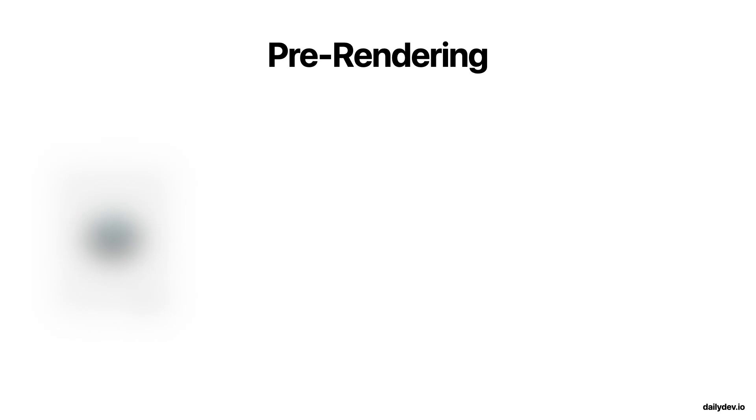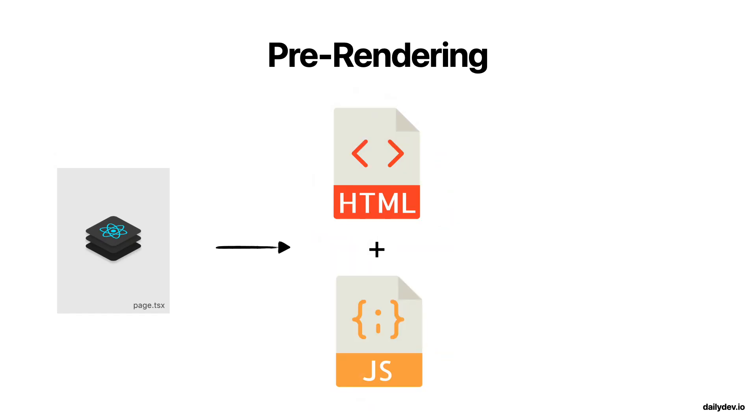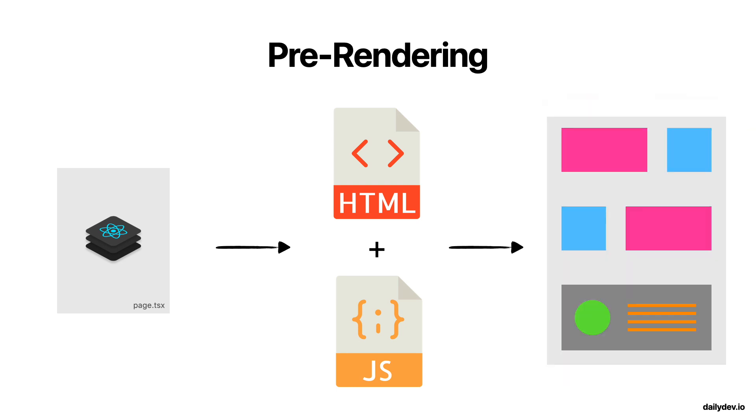Last time, we introduced the concept of pre-rendering — the default method that Next.js uses to render its pages — resulting in better performance and less effort for the client, by serving a pre-built HTML file bundled with the necessary JavaScript. We discussed that Next.js has two main ways of pre-rendering: static-side generation, which was the topic of the previous video, and server-side rendering, which we will be talking about today.